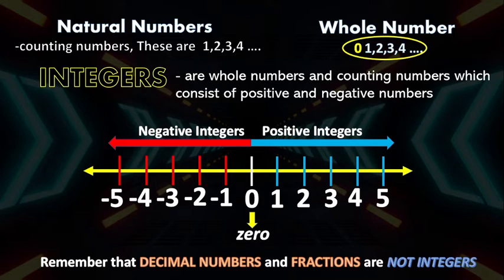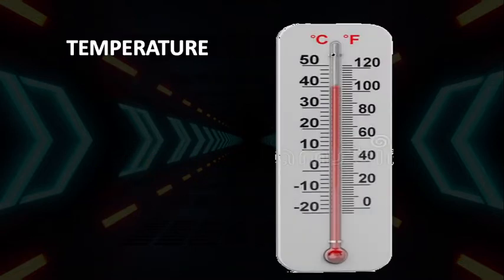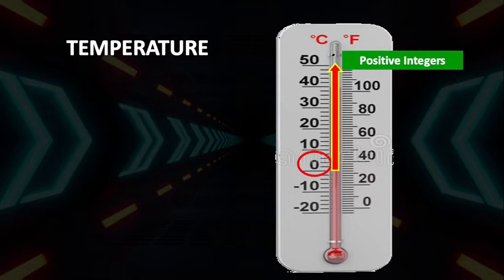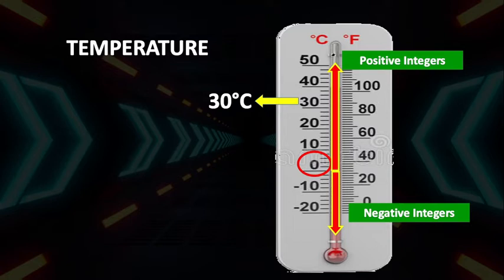We usually encounter integers in our daily life, so there are real-life situations that can be modeled by integers. The most common of these is temperature. If the temperature is above zero, it represents positive integers. If the temperature is below zero, it represents negative integers — for example, negative 10 degrees Celsius.